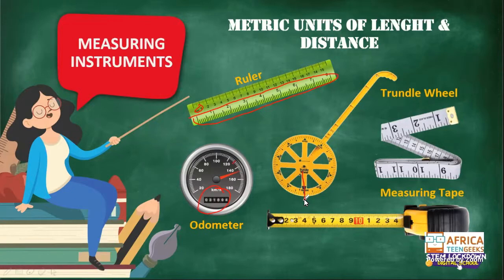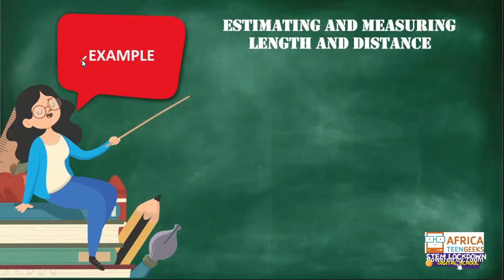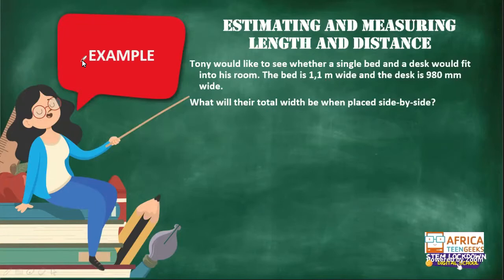Megan mentions that at the gas station they usually ask for the distance — yes, if you have to keep it for tax purposes, they want to write down how far you have driven, or from the first time you filled your gas tank to the next time, how many kilometers are on the odometer. Now let's look at an example of how we put this into practice. Tony would like to see whether a single bed and a desk would fit into his room. The bed is 1.1 meters wide and the desk is 980 millimeters wide.